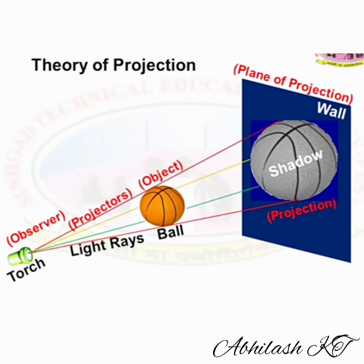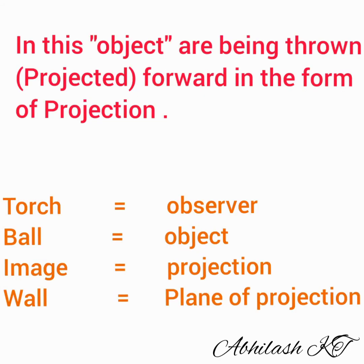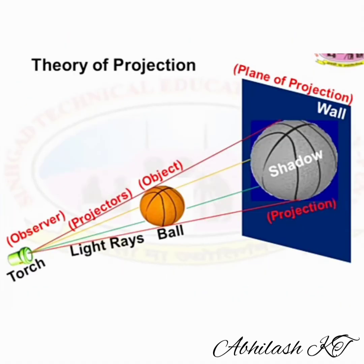Consider a torch and a ball in front of a wall. The image of the ball is projected onto the wall. In this system: the torch is the observer, the ball is the object, the image on the wall is the projection, the wall is the plane of projection, and the light rays are the projectors. This is the system of projection.